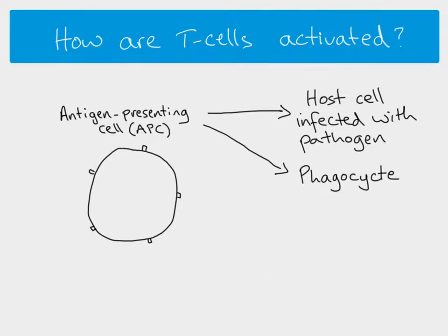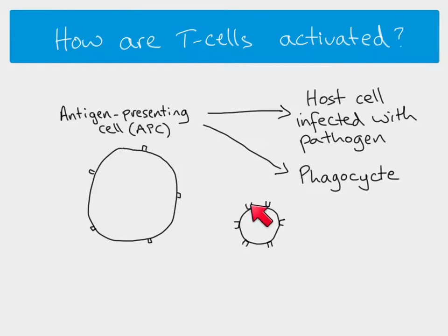So the APC must be from the person's own cells, but it could either be an infected cell or a phagocyte. To activate the T cell, the T cell has receptors on its outside - these are not antibodies, you only find antibodies on B cells, but they do a very similar job. These receptors are able to bind with the antigens on the outside of the APC, and when that binding occurs, the T cell is activated.